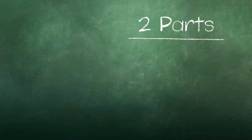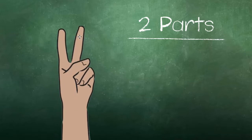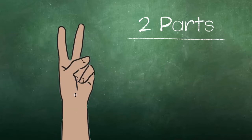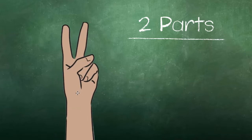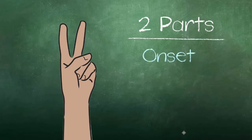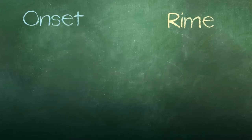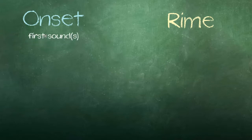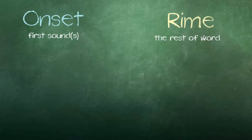Before I teach rhyming, I would start by explaining to students that there are two parts of words: the onset and the rhyme. I would tell them that the onset is the first sound or sounds of any word, and that the rhyme is the rest of the word.